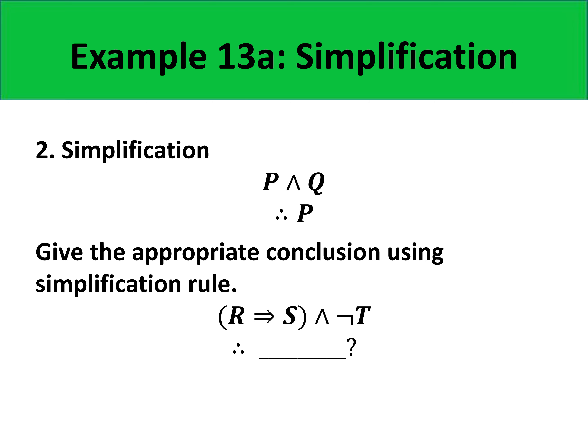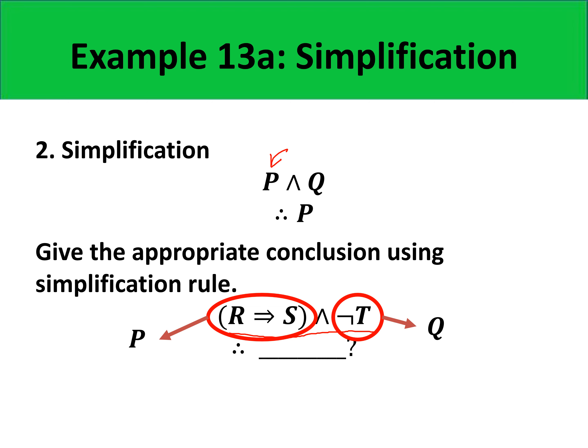Applying simplification in symbols — give the appropriate conclusion using the simplification rule for: R implies S, and negation of P. Here, R implies S takes the role of P in our formula, and negation of P takes the role of Q. So according to the formula, the conclusion must be P, which corresponds to R implies S.